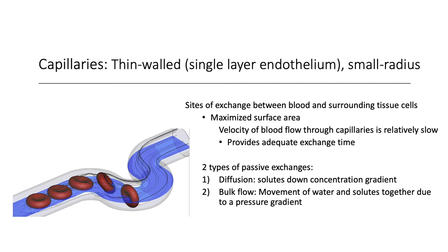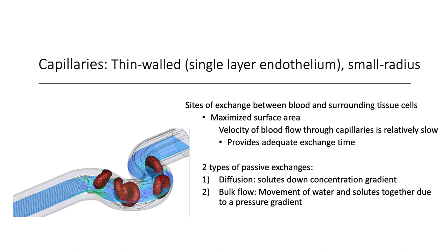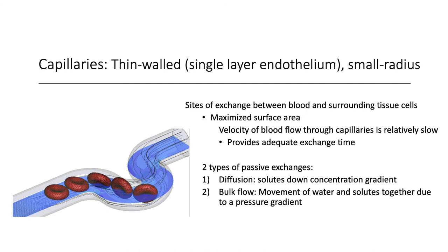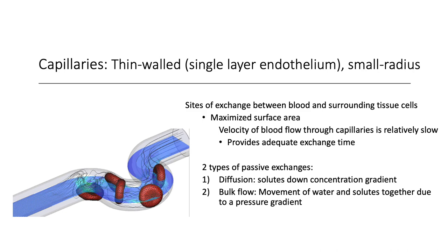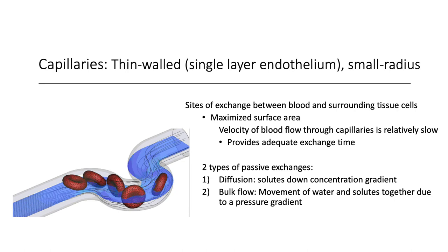Here we can see rouleaux in action. The capillaries are thin-walled, with a single simple squamous endothelium layer — one layer of flattened squamous cells — and a very small radius, the width of one red blood cell. This is ideal for maximizing surface area and exchange of materials, so all the blood is exposed to the vessel surface. The velocity of blood through capillaries is also very slow, which allows for adequate exchange time. If blood were moving quickly, there wouldn't be adequate time to exchange materials.